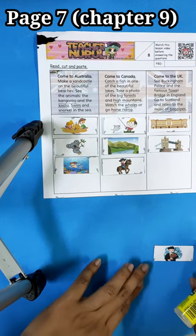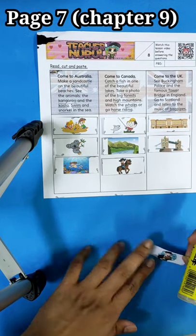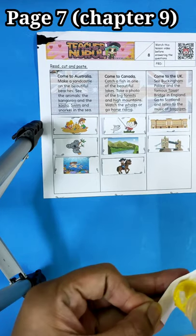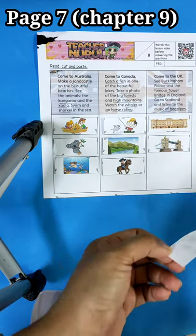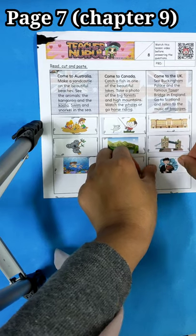And the next one we have bagpipes. Music of bagpipes. Yes, we have it here. So this is the bagpipes. We are all done.